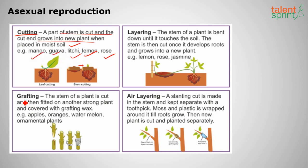The next method is grafting. The stem of a plant is cut and then fitted onto another strong plant and covered with grafting wax — essentially a stem transplant. This is done for apples, oranges, watermelon, and ornamental plants.